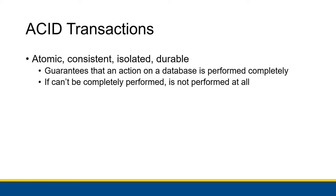Something I briefly want to talk about is an ACID transaction. A transaction is just an action that makes a change to a database. It involves a person requesting that a DBMS makes a change, the change is attempted, and then it's checked to make sure the entirety of the change is made. If it is, the change is saved. If not — say you're trying to change five rows and only two are successfully changed — then the whole transaction is cancelled, everything is rolled back, all changes are reverted, and the database remains as normal.